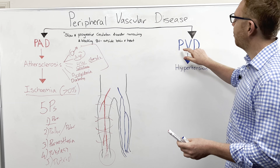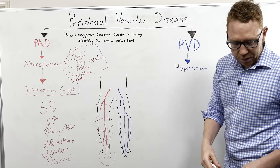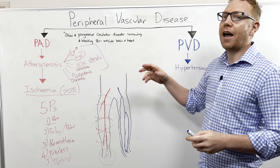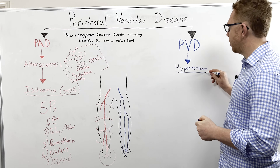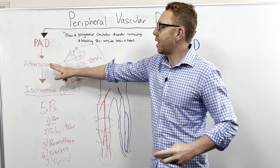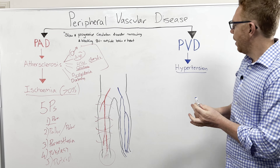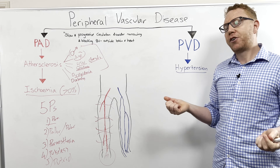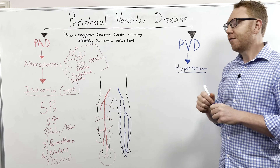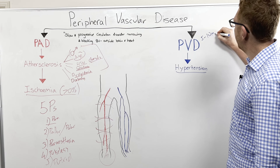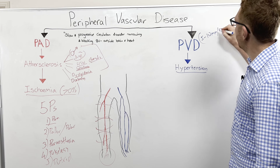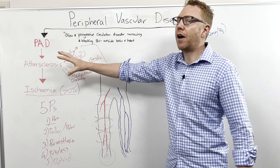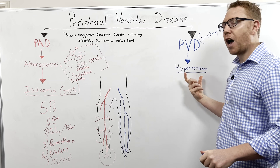Now we move to peripheral venous disease, which affects veins outside the brain and heart. The crux of their issue is hypertension. Unlike PAD, which involves atherosclerosis found only in arteries, peripheral venous disease involves hypertension in the veins. Normally veins only have a blood pressure of 5 to 10 mmHg, compared to arteries at 120 mmHg, so venous pressure is much lower.